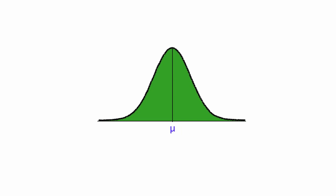A sample mean can be anywhere within this green area. For sample mean, I use the notation X bar. The value of the sample mean can be above the population mean, or it can also be below the population mean. There's a probability that the sample mean will show up somewhere in this green area.